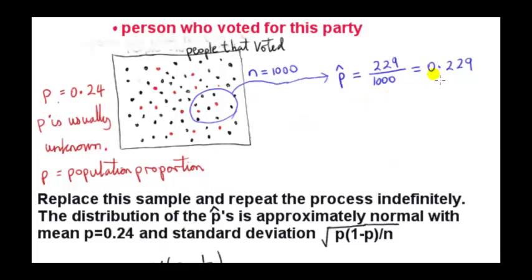Now imagine that we replace this sample of size 1000 and pick out another sample of size 1000. That other sample may not involve these values or it may have some overlap. So we take out another sample and calculate a different value for P hat.